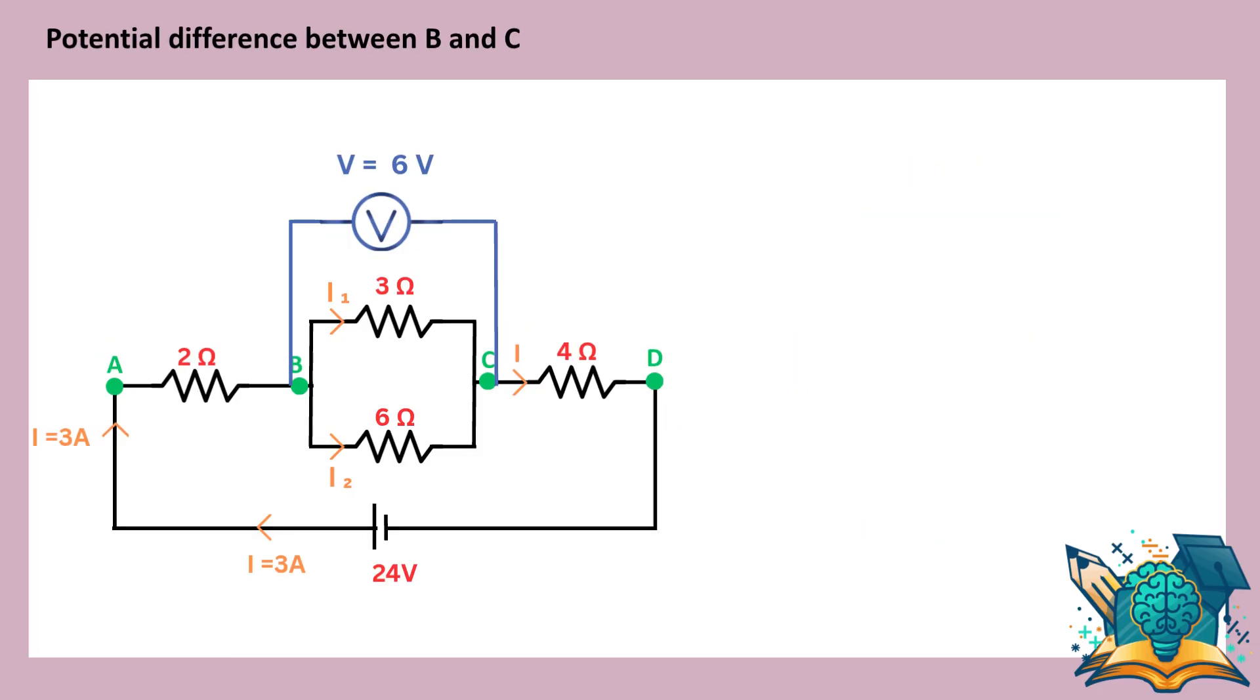Now, we can find I1 and I2. According to Ohm's law, V equals I times R. So, we can rearrange the formula and write current as I equals V over R. So, I1 equals 6 volts divided by 3 ohms.